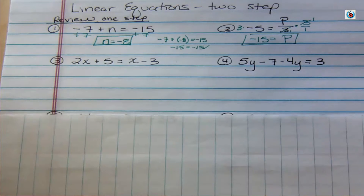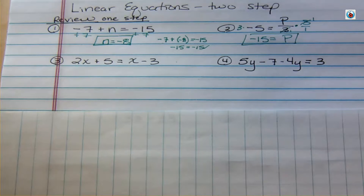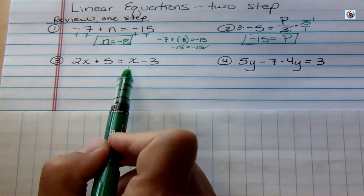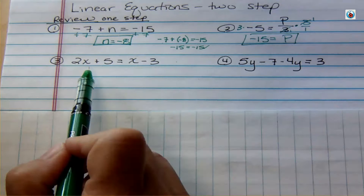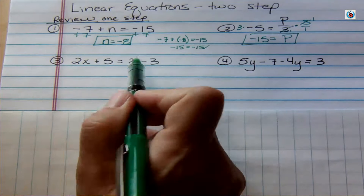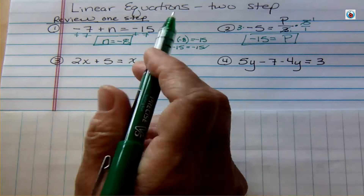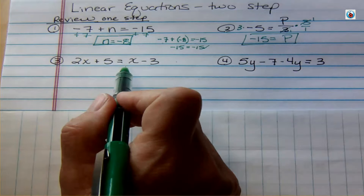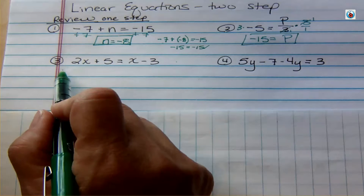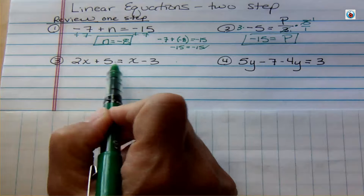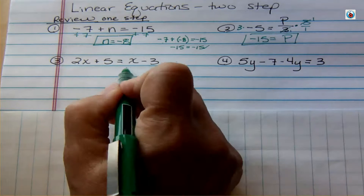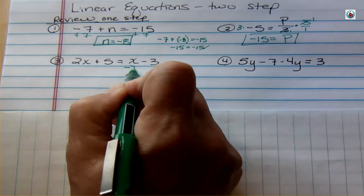Now let's look at equations where we have to do more than one step. In the old types we had just one variable on one side, but now you could have a variable on both sides. I'm going to use a consistent method — there's more than one way, but if you're getting wrong answers, use mine. I want to get the x's on one side. I don't want x on the right, so I'll subtract x, since it's a positive x.